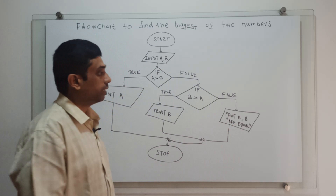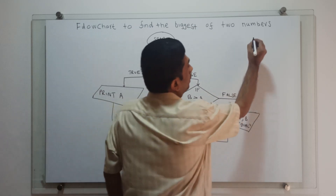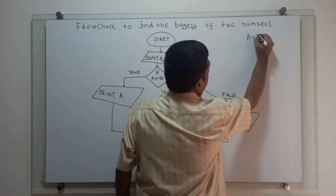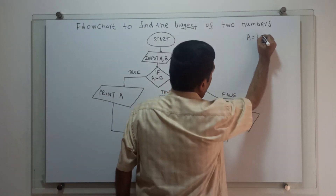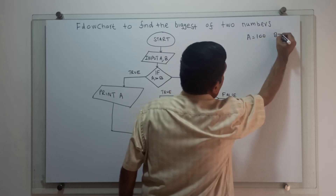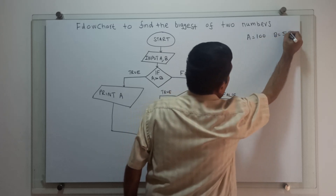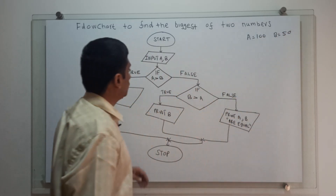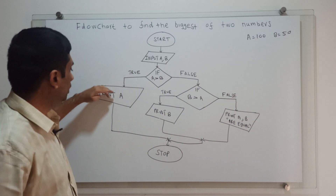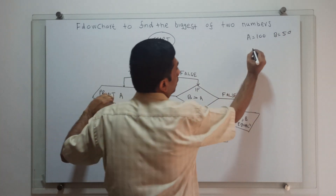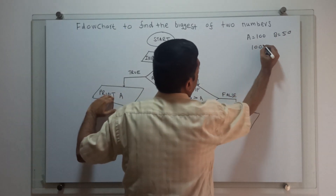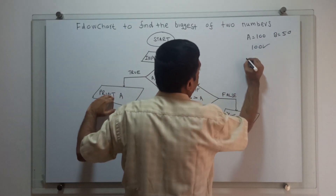We will try some inputs. I am giving A equal to 100, B equal to 50. In this case, if we check A greater than B — true — print A. That means 100 will get printed.